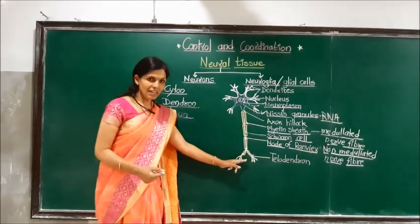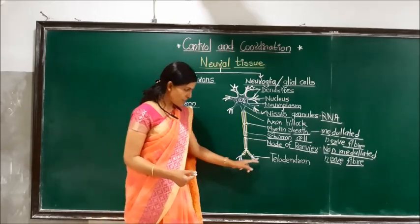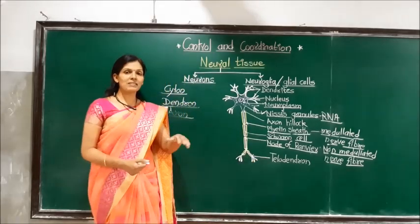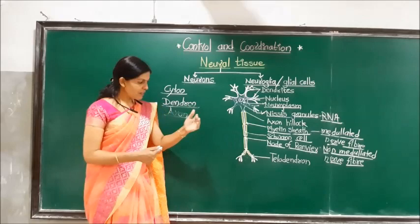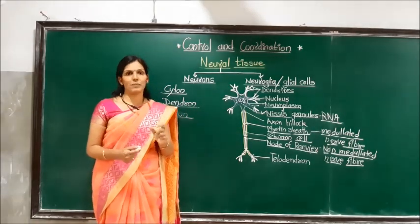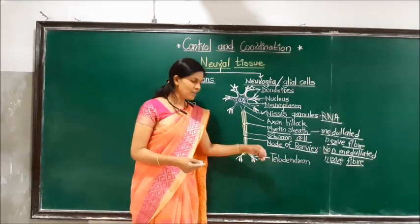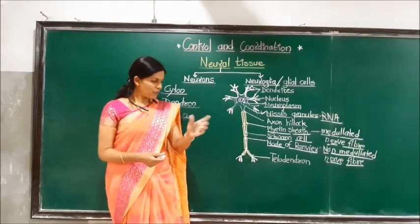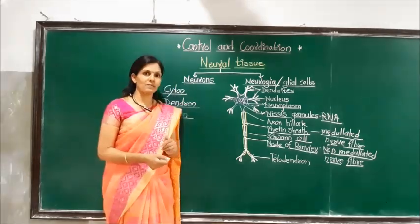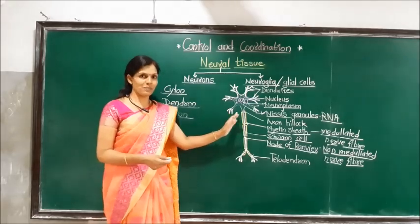At the terminal end, the axon gives rise to small branches called telodendrons, which carry the impulse to another nerve fiber. The nerve fibers are connected to each other by a synapse. Importantly, in the axon, neurofibrils and Nissl granules are absent.